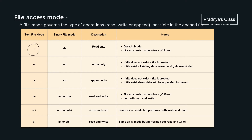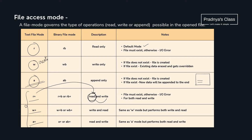The first mode is R mode — this is the default mode. If you don't mention any mode, the file will open in read mode. The second mode is write mode, and the third is append mode. If there is already data in the file and you need to add more, you use append mode. There are also additional modes: R+, W+, and A+. R+ opens in read mode but also allows write operations. W+ opens in write mode but allows read operations too. A+ opens in read mode and allows write operations as well. Generally we use R, W, and A mode.